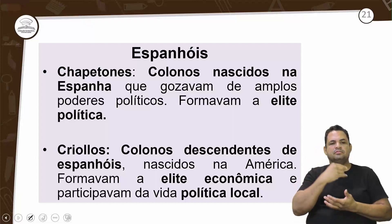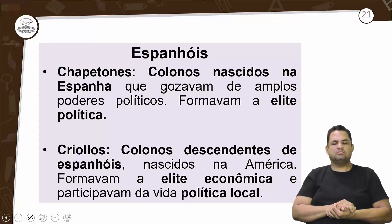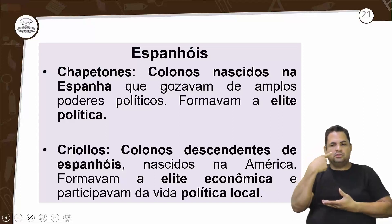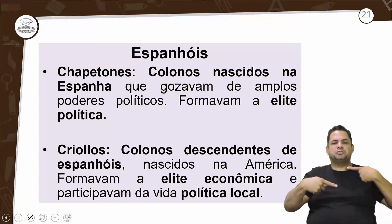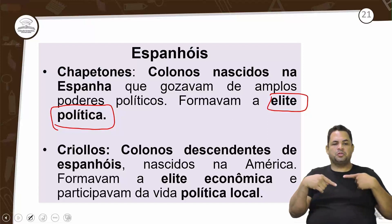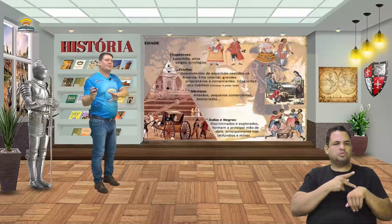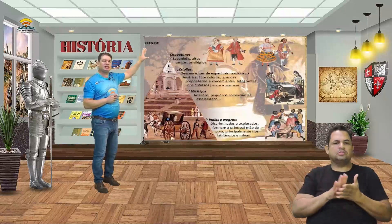Os espanhóis: temos os chapetones, que eram colonos nascidos na Espanha que gozavam de amplos poderes políticos e formavam a elite política. Na pirâmide social, os chapetones ficam em cima — espanhóis puro sangue, nascidos na Espanha — fazendo esse controle com amplos poderes políticos.